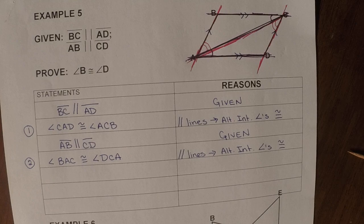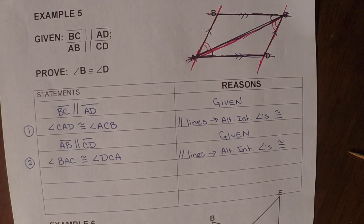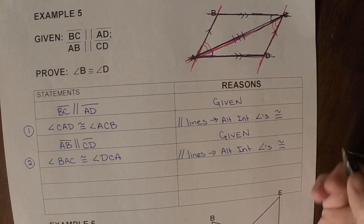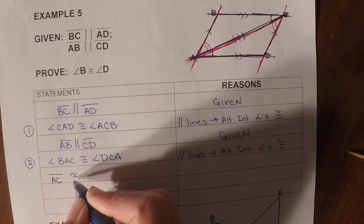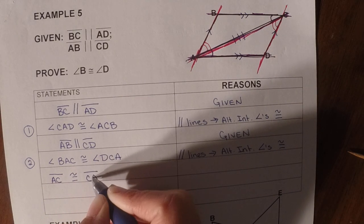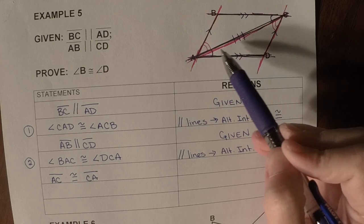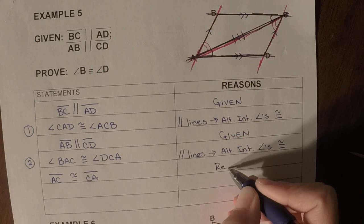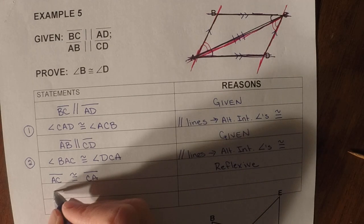So anytime you see parallel lines, you're looking for these alternate interiors or corresponding. Anytime that you see bisect, you're looking for congruent angles or congruent segments. Anytime you see midpoint, it's the same thing. So now we go for our third congruency. We're out of given, so that means we need a reflexive side or vertical angles. And in this case, we do have a reflexive side here in the middle. So we would say segment AC is congruent to segment CA. And this is our reflexive property.